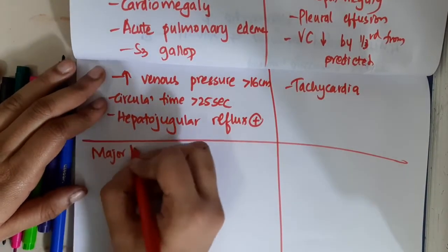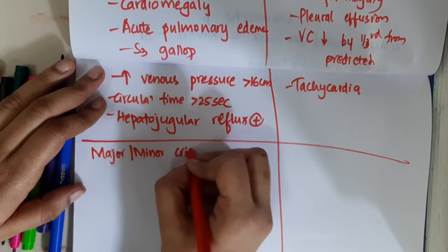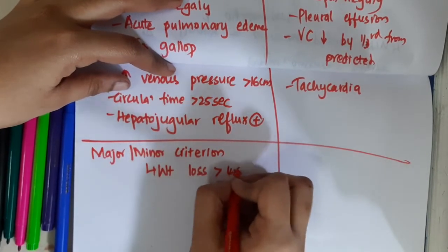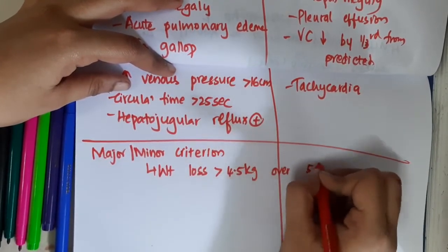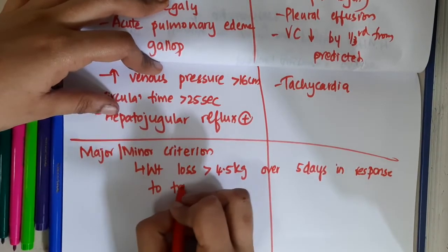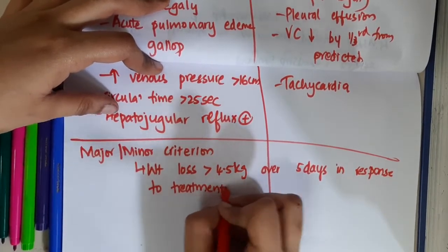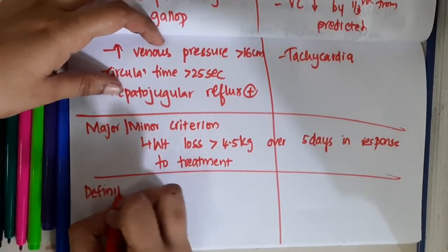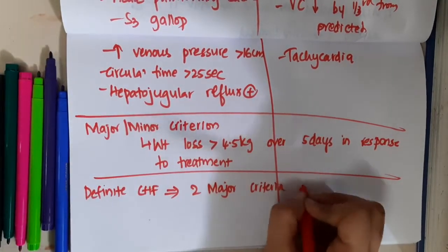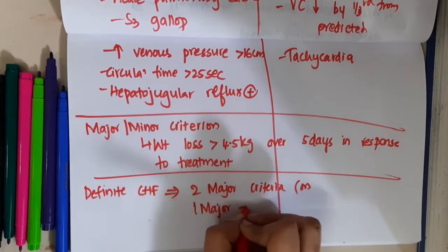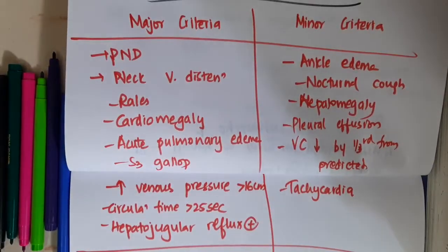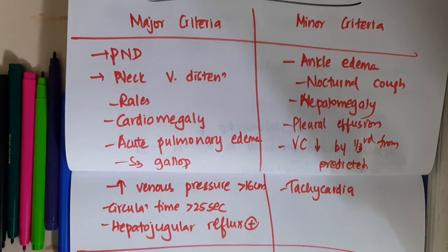There is also a major or minor criterion: weight loss of more than 4.5 kg over 5 days in response to treatment, i.e., by giving diuretics if edema decreases. The criterion for definitive congestive heart failure is two major criteria, or one major criteria and two minor criteria.